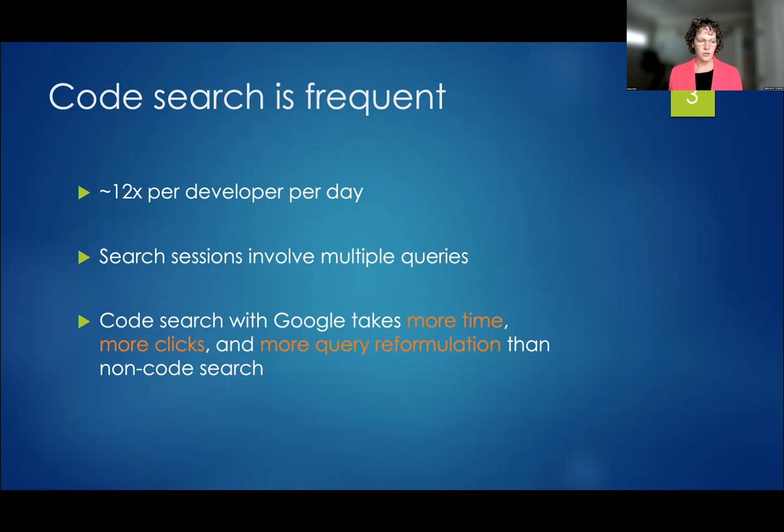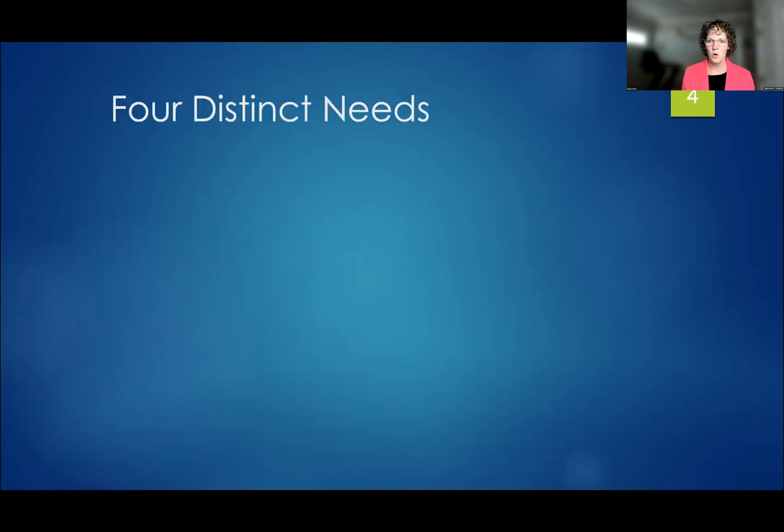In our code search research, we found that there are four distinct needs that cropped up as being the most common. So I want to talk about these. One of them, the most common reason developers were searching, were how questions. How do I use this API? May I have some example code that shows me how to do something? This was about a third of the searches.